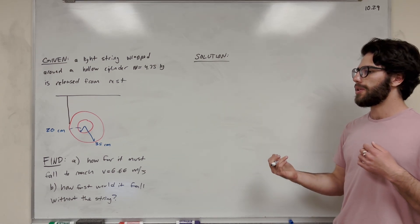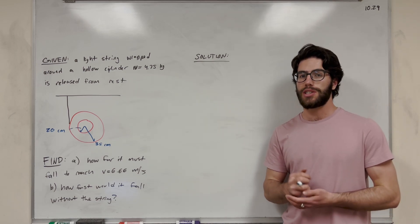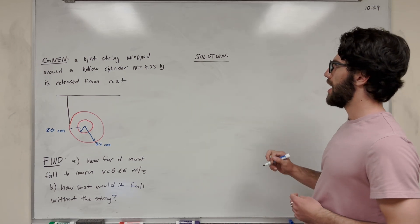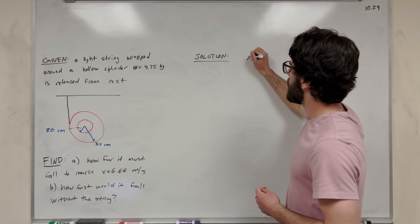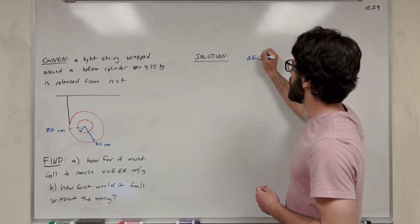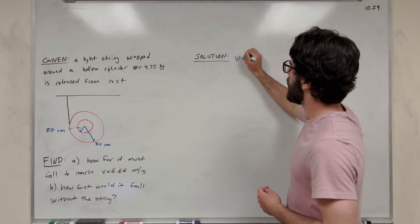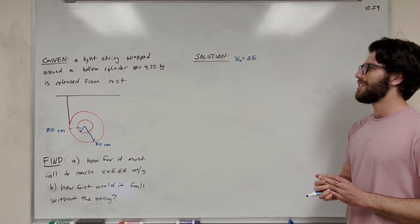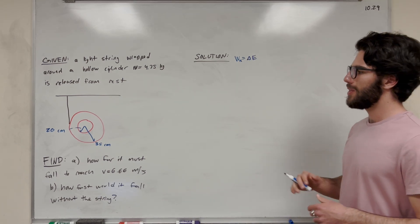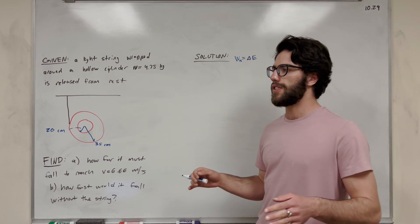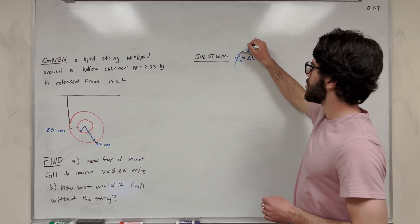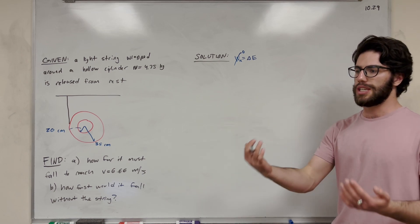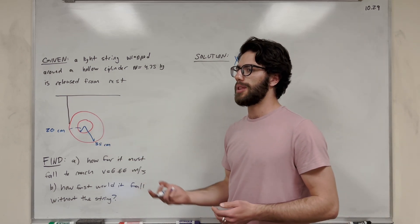Not only are we going to have our normal work-energy equation, but we're also going to have rotational kinetic energy thrown in now that we're in Chapter 10. Our solution starts with the equation: change in energy equals work non-conservative. In this case, we don't have any friction or air resistance, so we're going to set work non-conservative equal to zero. Nothing is taking energy out of the system and nothing is putting energy in.